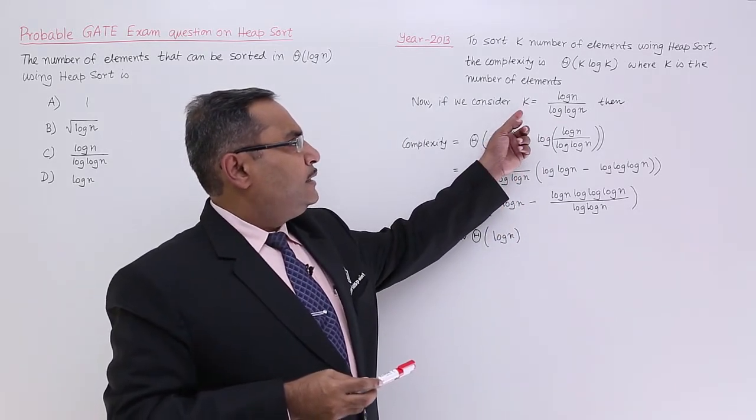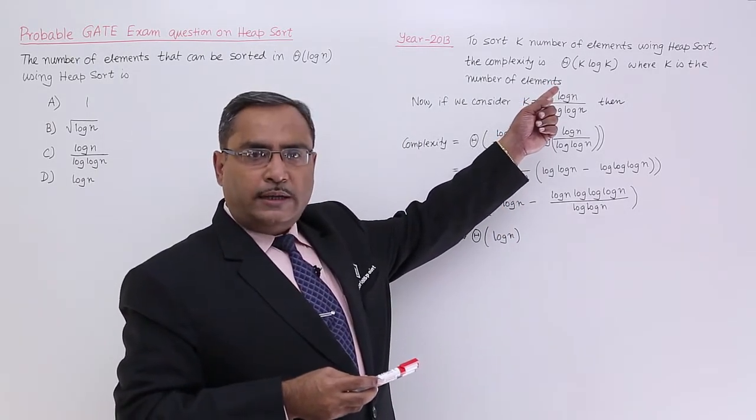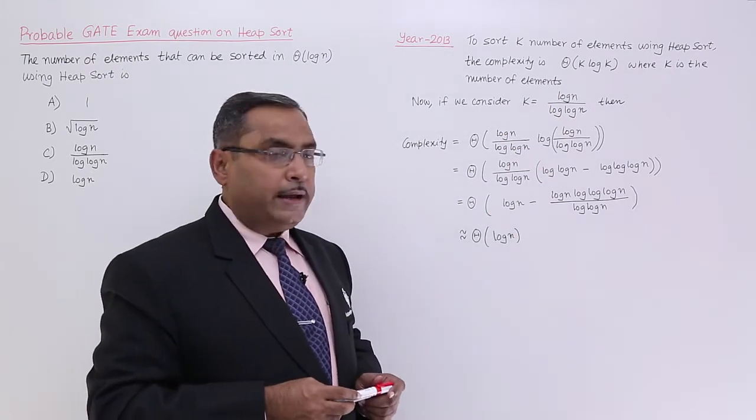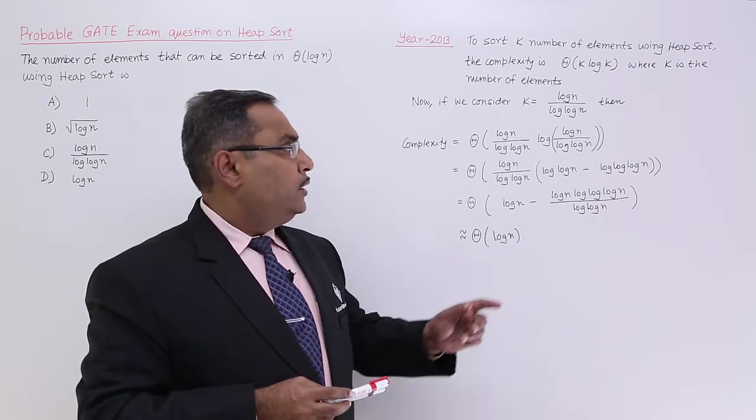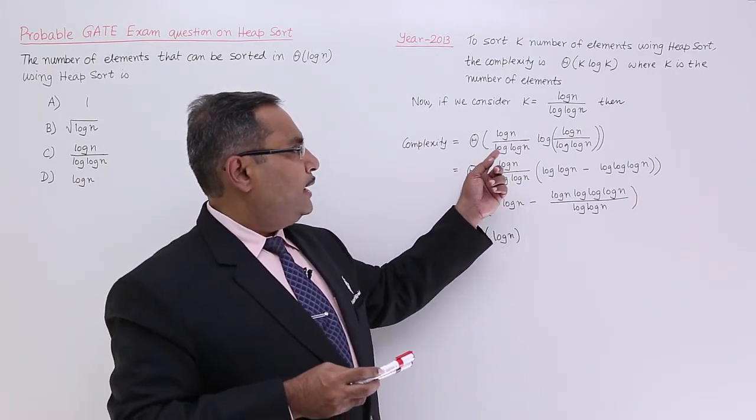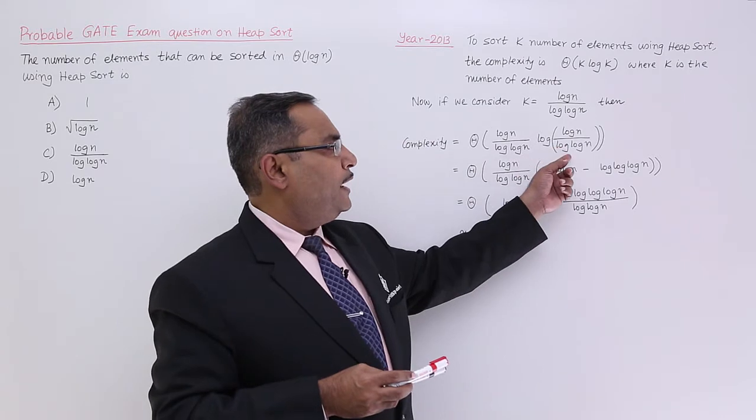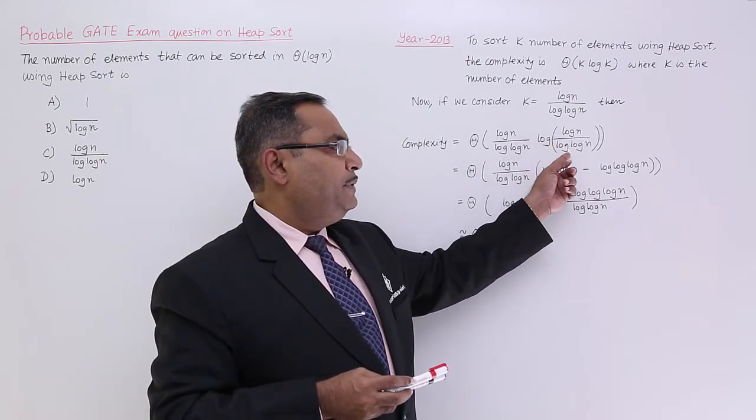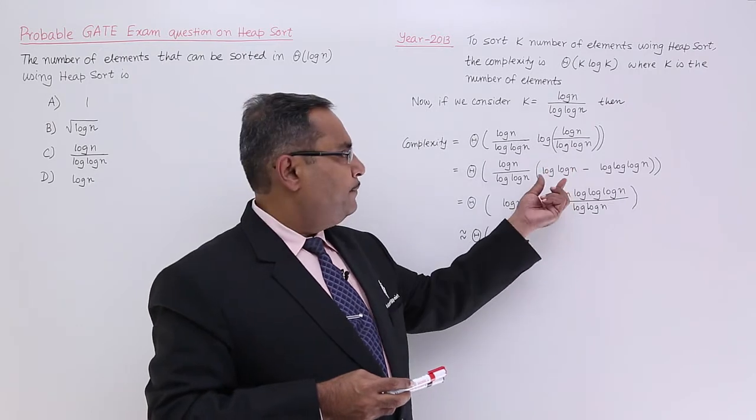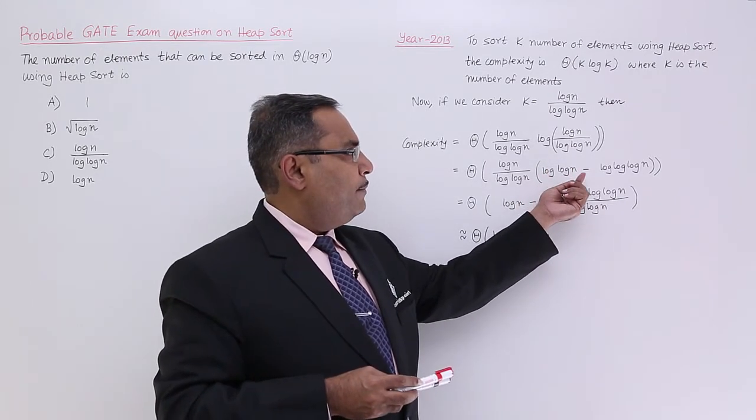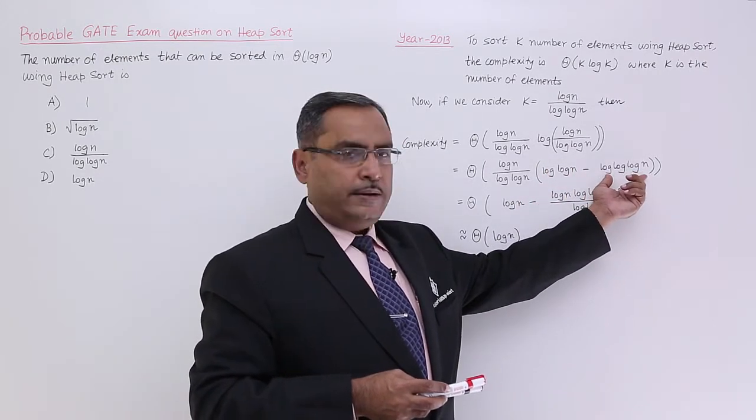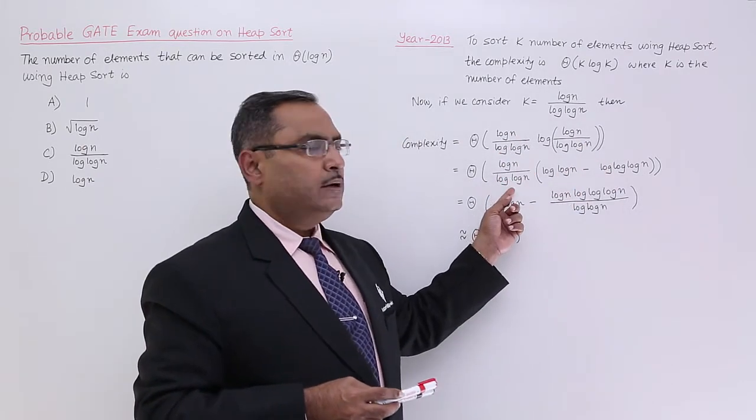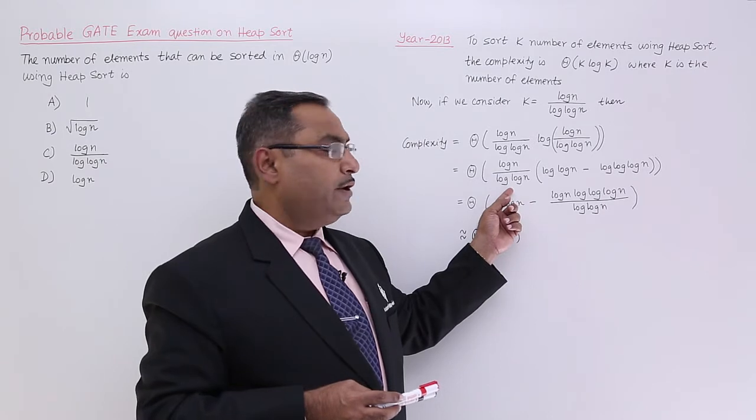So, here this k in this particular formula, that is a complexity formula, is getting replaced by log of n by log of log of n. So, now I am just replacing this one. So, k has been replaced by this. We know that log a by b is equal to log of a minus log of b. So, in this way, the thing has been written and this particular factor has been written outside.